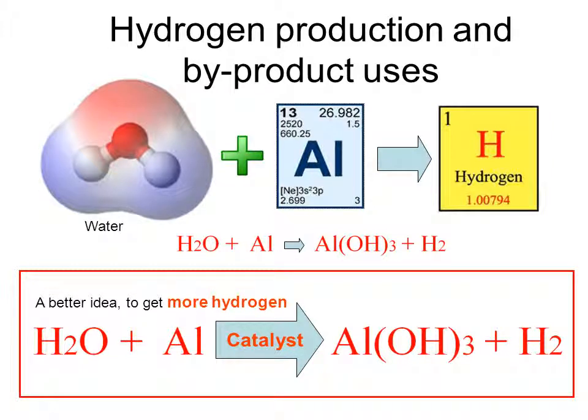This video deals with hydrogen production and in particular the byproducts including aluminum hydroxide and aluminum oxide. The reaction is very simple: you just add water to aluminum and you produce hydrogen.